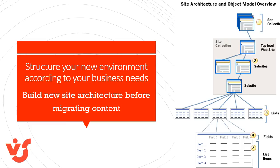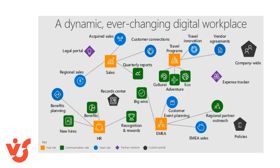Site architecture needs to be in place before you migrate data and files. The new site architecture needs to be structured according to your business's needs. If your business operates by department, create separate site collections for each department. If your business operates by location, create separate site collections for each region. If your business operates by products or processes, create separate site collections for each service or product. WEGO has opted to build a flatter structure using multiple site collections connected by a hub site instead of stacking layers of sub-sites on top of their master site collection.